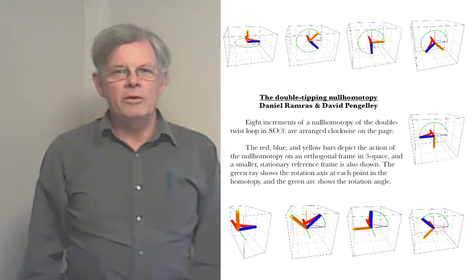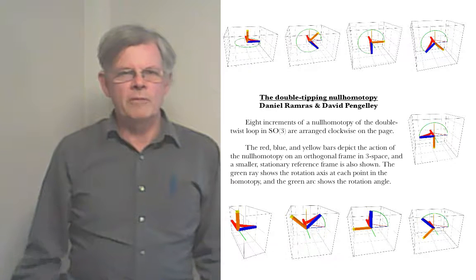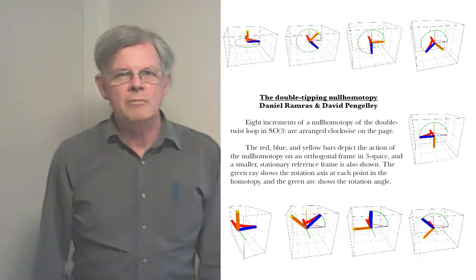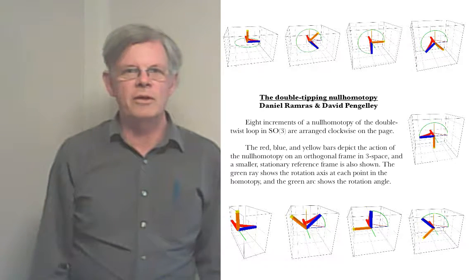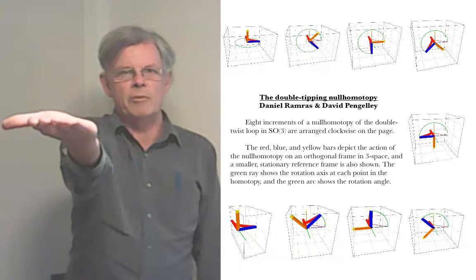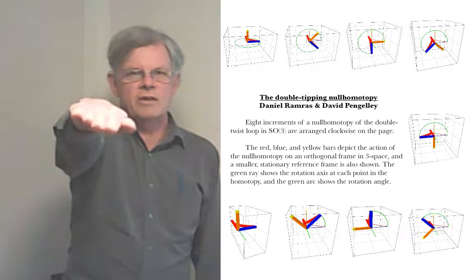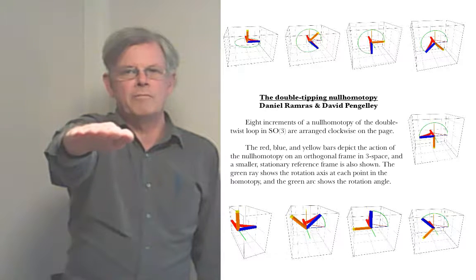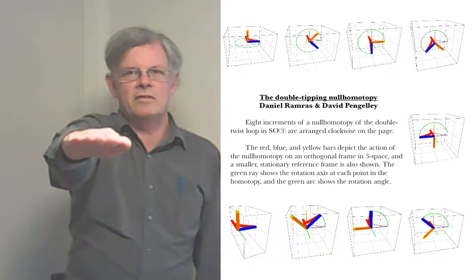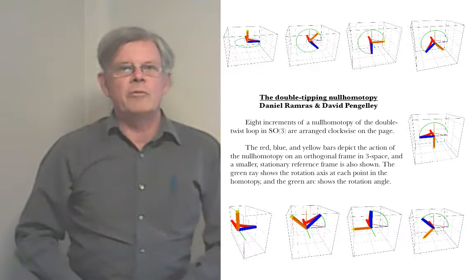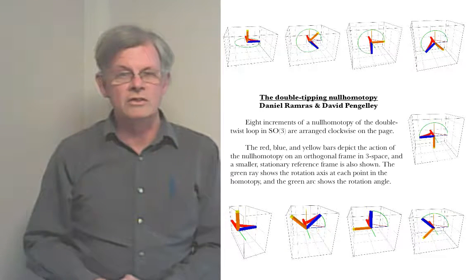There's a theorem in our paper called the Every Which Way Theorem, which applies to all null homotopies, and it says that under any null homotopy of the double turn, every direction in space must go to every other direction in space at least once. So for instance, in this null homotopy, we could ask about the candle in the default position pointing straight up, and ask: when does it point straight down during the null homotopy? It points straight down at the very middle moment in the middle movie. This null homotopy is very efficient, and we have results to claim that in fact most directions point in most other directions only once during this null homotopy.